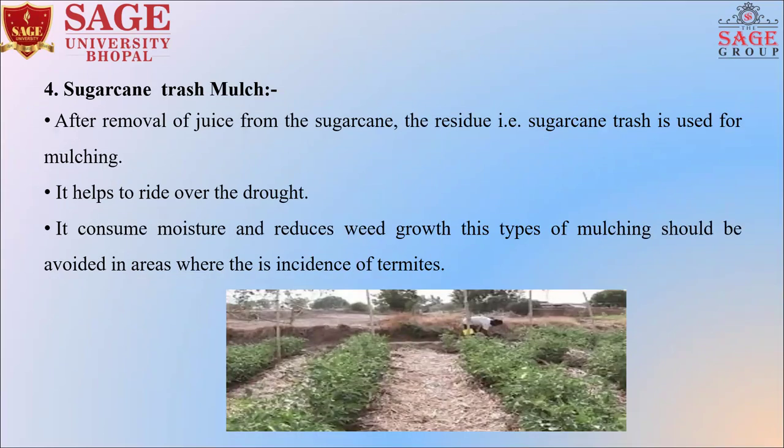The fourth is sugarcane trash mulch. After removal of juice from the sugarcane, the residue — that is, sugarcane trash — is used for mulching. It helps to ride over drought, conserves moisture, and reduces weed growth. This type of mulching should be avoided in areas where there is high incidence of termites.